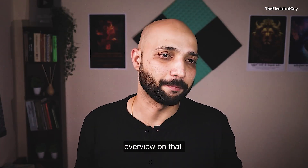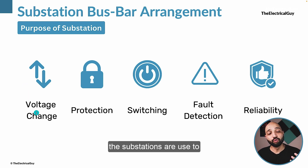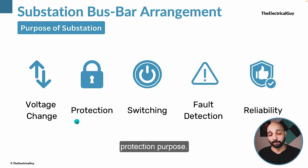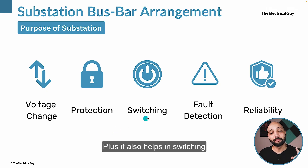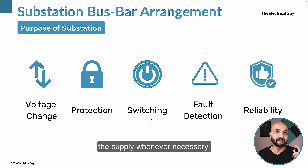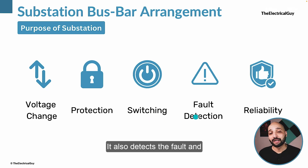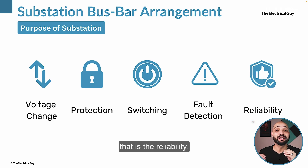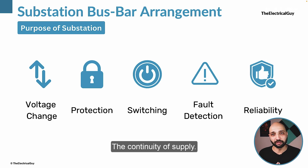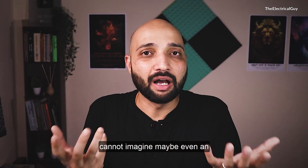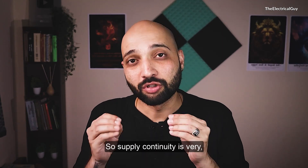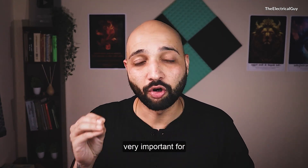Substations are used to change the voltage level — step up or step down. They also provide protection with the help of circuit breakers, which will trip in case of an abnormal situation such as a fault. They help in switching the supply whenever necessary, detect faults, and most importantly, ensure reliability and continuity of supply. In today's world, we cannot imagine even an hour without electricity, so supply continuity is very, very important.